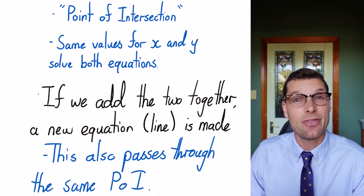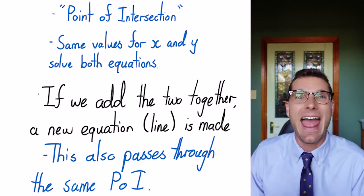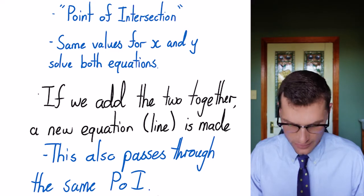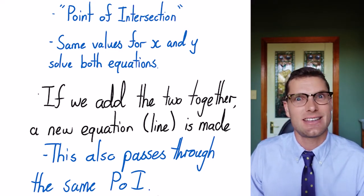So we can add them together to get rid of a variable, which tells us the x coordinate, and that tells us the y coordinate. So once we've got those two things, we know where the point of intersection is.